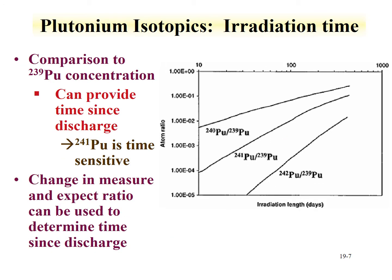The plutonium isotopics can also be used to determine the time that the sample sat in the reactor for the irradiation. In this case, one uses the plutonium-239 concentration. Atom ratios are provided against plutonium-239.